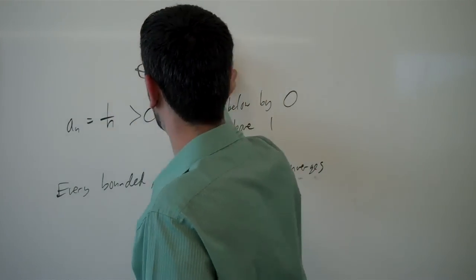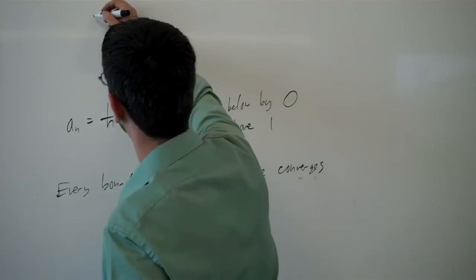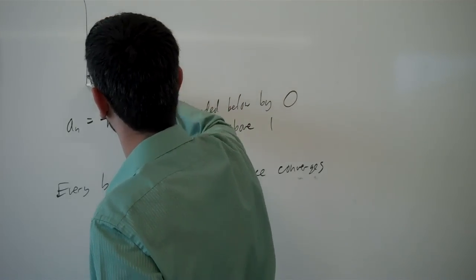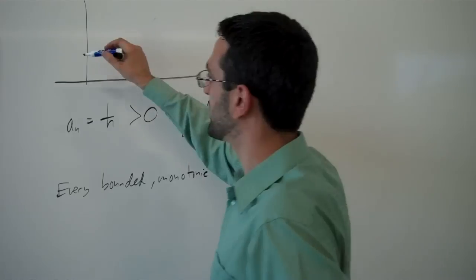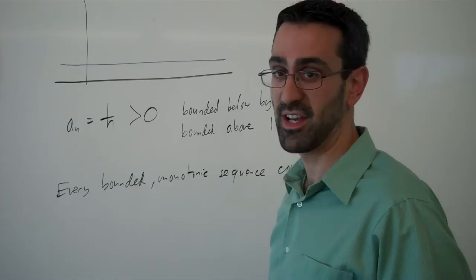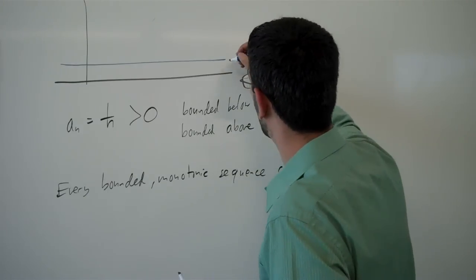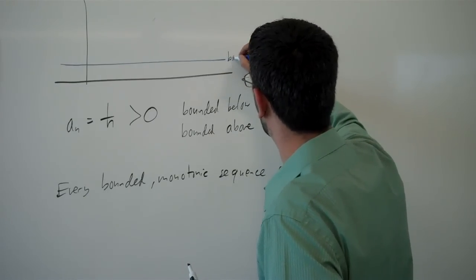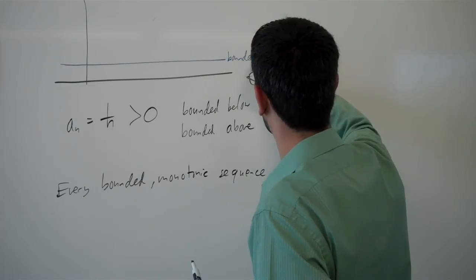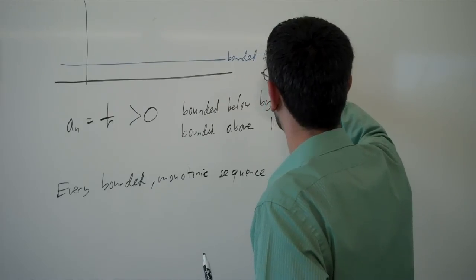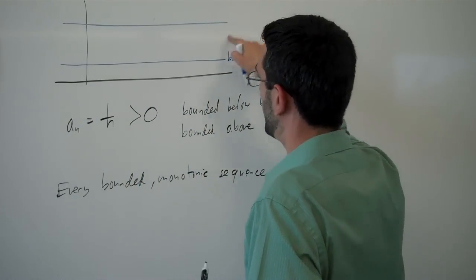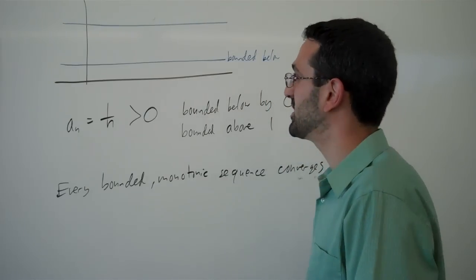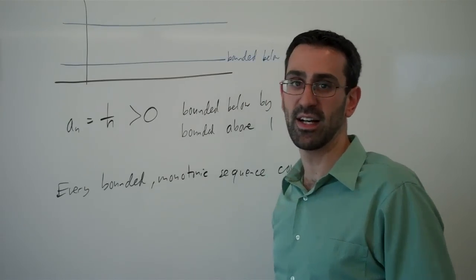So imagine we have a sequence of values. And we know that those values never get smaller than that value. So this is sort of the bounded below value. And never get larger than this. And suppose that in this particular case it is monotonic increasing.